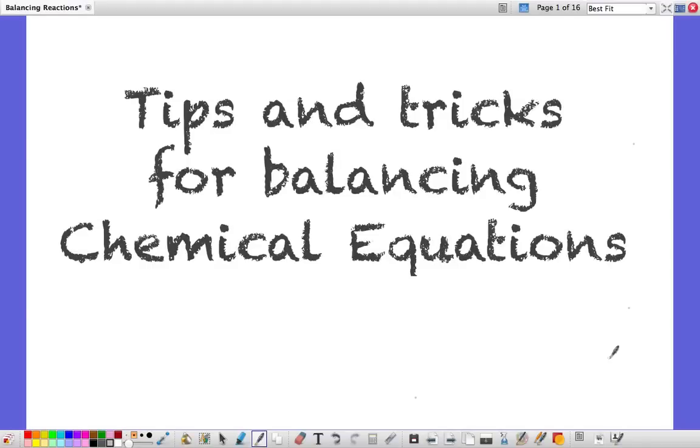I want to go through some tips and tricks that will help you in balancing chemical reactions in general and also some of the trickier ones. Basically we're always aiming to get the same number of each kind of atom on the left as on the right, in other words in the reactants as in the products. I've got four ideas for you that you can use.